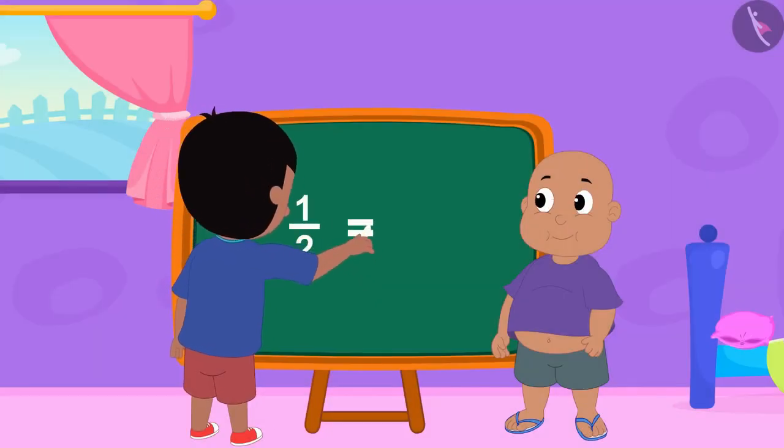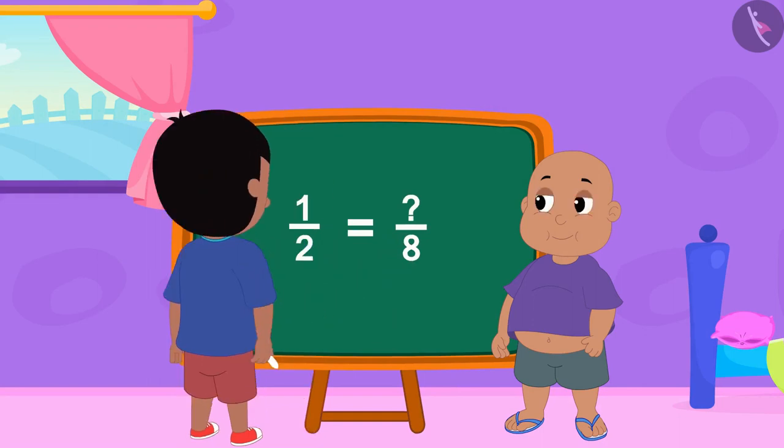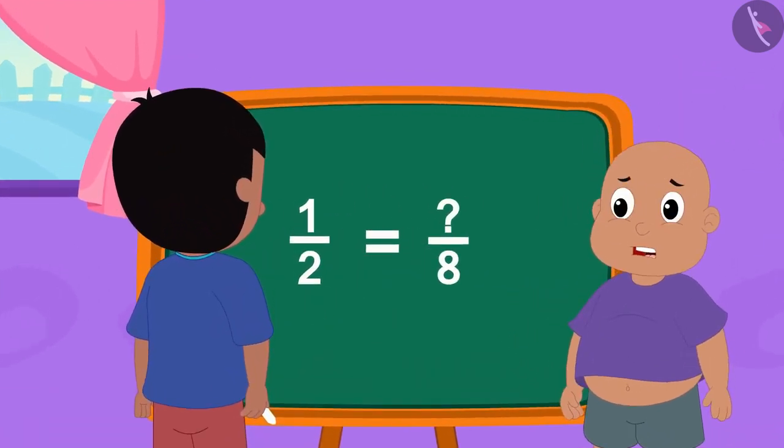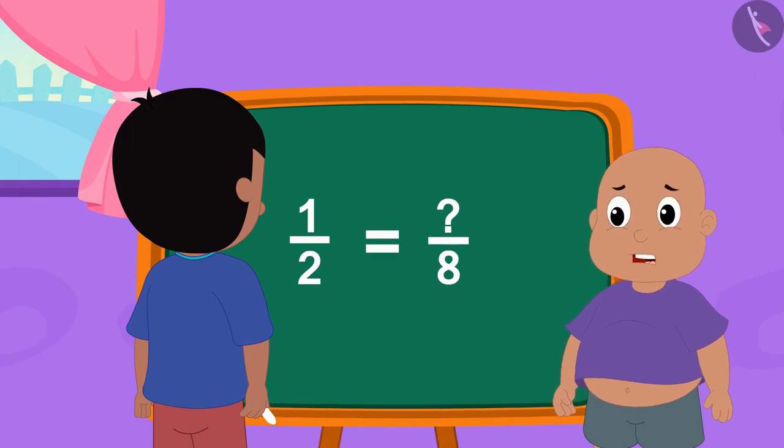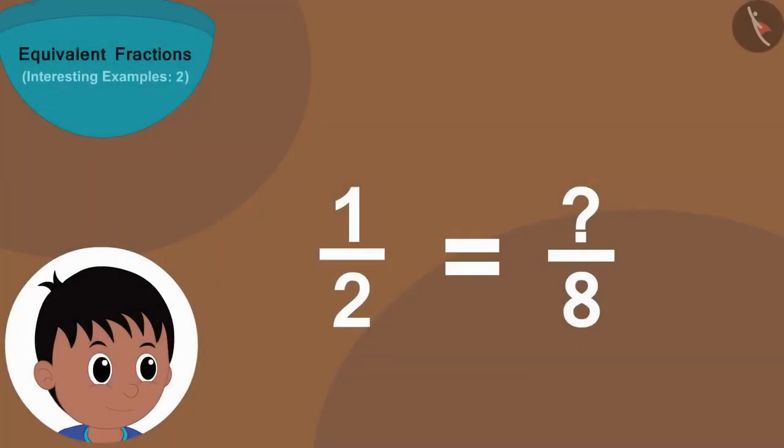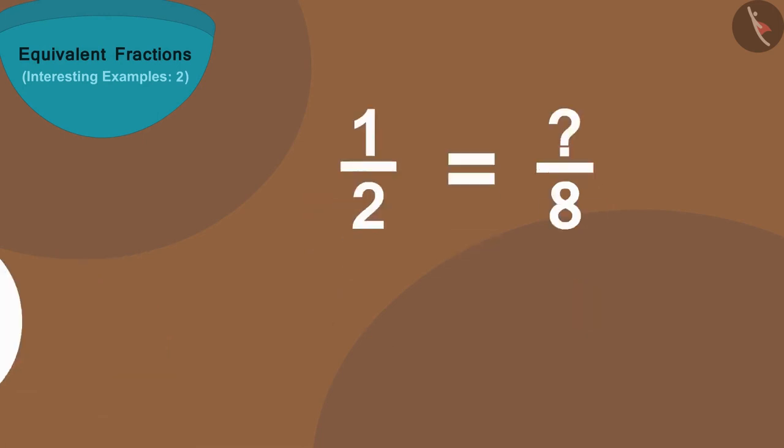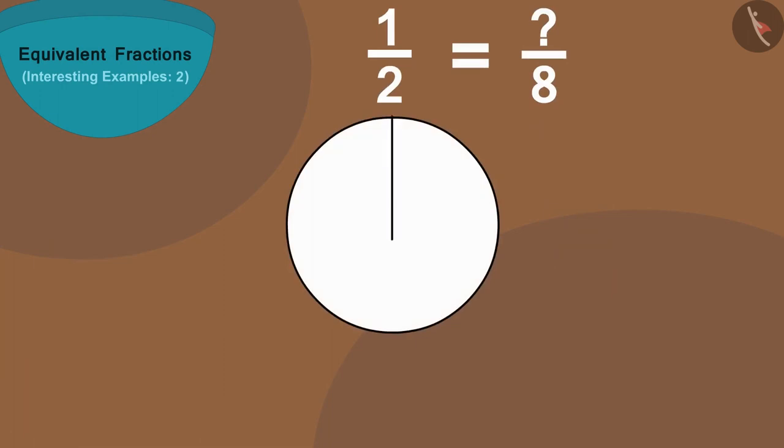Raju first wrote this fraction. Bablu started finding the fraction. Children, can you help Bablu? Raju wrote this fraction. Here the number 2 shows how many parts of a thing are created, and the number 1 shows that we took one of those two parts. If we divide this circle into two equal parts and fill color in one part, then we can write the colored part of the circle in the form of a fraction in this way as 1/2.